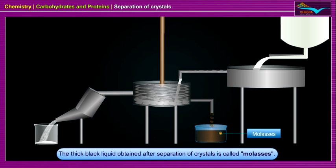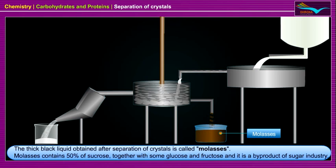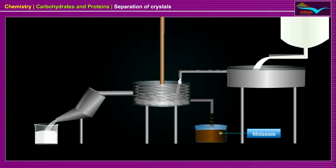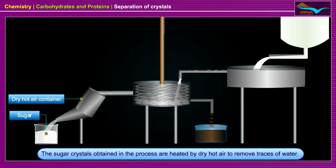The thick black liquid obtained after separation of crystals is called molasses. Molasses contain 50% of sucrose together with some glucose and fructose and it is a by-product of the sugar industry. Molasses is used in the manufacture of alcohol by fermentation and as animal feed supplement. The sugar crystals obtained in the process are heated by dry hot air to remove traces of water.